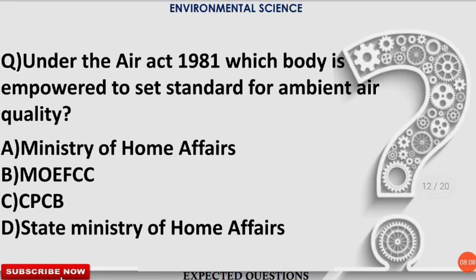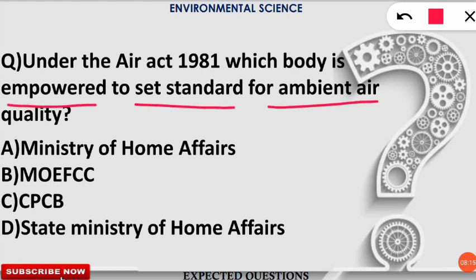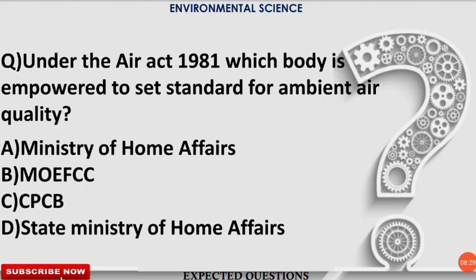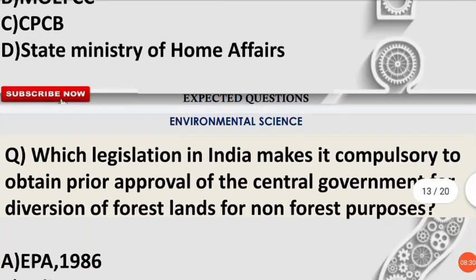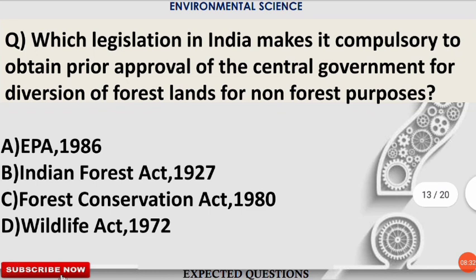The next question is also from the Air Act 1981: which body is empowered to set standards for ambient air quality? The correct option is C — the Central Pollution Control Board (CPCB) has the power to set standards for ambient air quality.